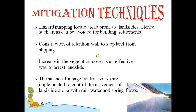Surface drainage control works are implemented to control the movement of landslides along with rainwater and spring flow. The surface drainage system should be very strong so that water does not log in one place. After prolonged waterlogging, the particular rock or land becomes very weak and can tumble and fall from the hills onto the road, disrupting traffic and hitting vehicles, causing many accidents and loss of life. These mitigation techniques can help reduce the severity of landslides, even though we cannot completely stop them.